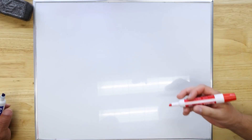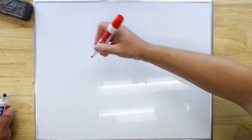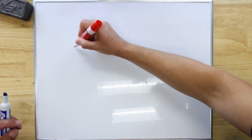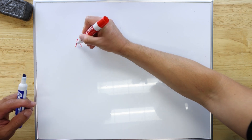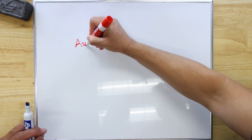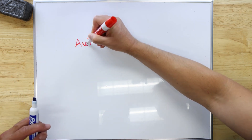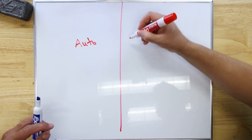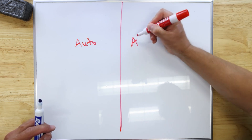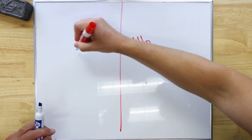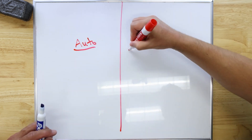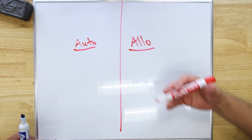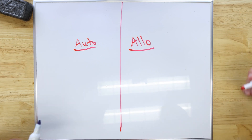All right, David, I'd love to ask you to help clarify this for me. I want to know when do we go auto and when do we go allo? I know there's no universals, but just in general — how do we choose?